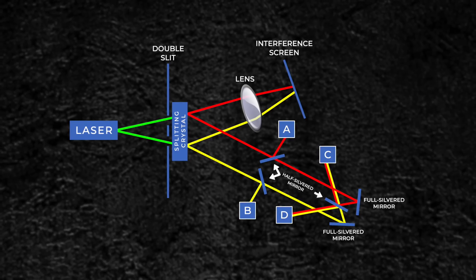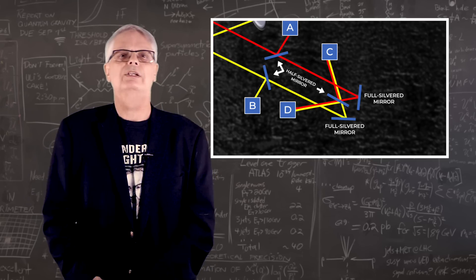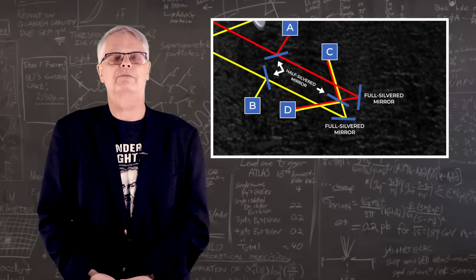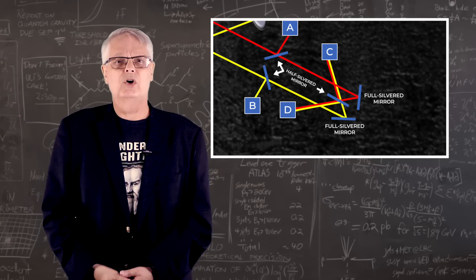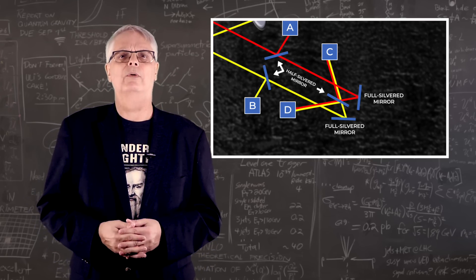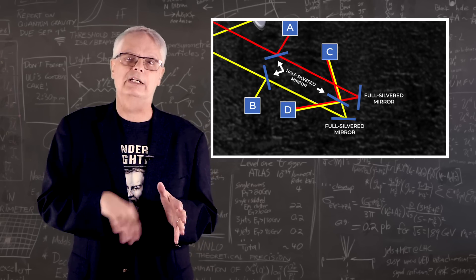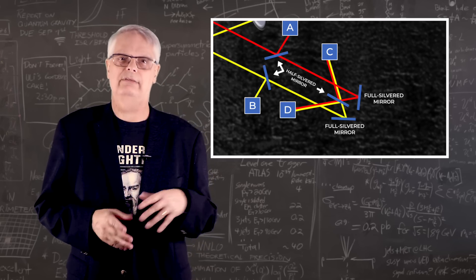C and D can see yellow or red. The bottom line is whether you see a cousin photon from detector C or D, you don't know which slit the photon went through. The addition of C and D completely erases the knowledge that A and B give you.